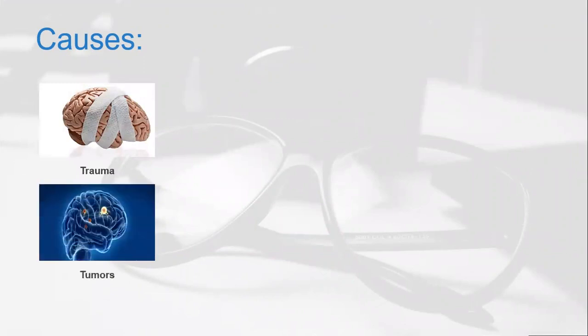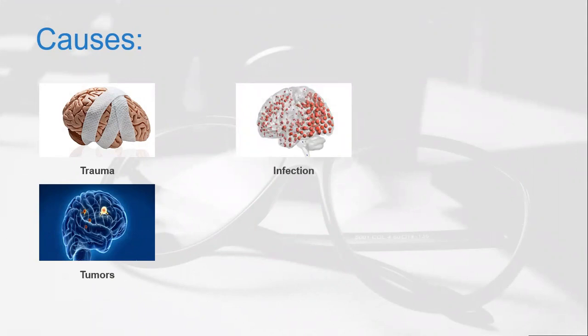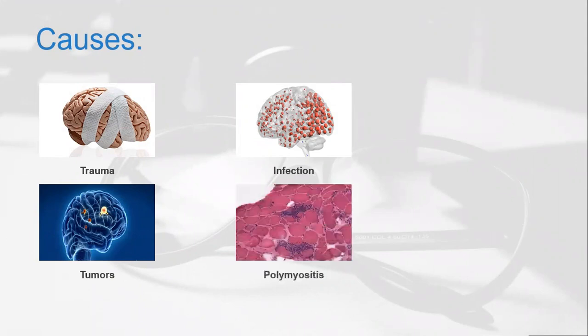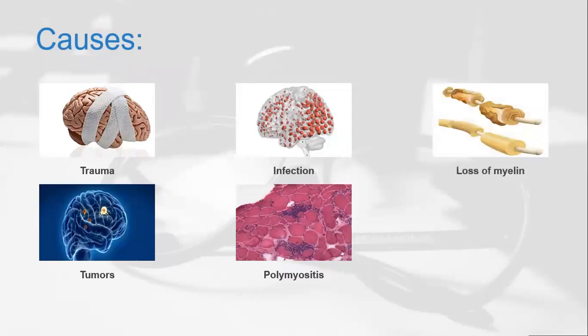Causes of locked-in syndrome include trauma to the head, tumors in the brain, infection as is present in case of Alzheimer's patients, and polymyelitis which is inflammation of the nerves. Loss of myelin of the neurons can also lead to locked-in syndrome. Amyotrophic lateral sclerosis in which muscle inflammation occurs as the neurons aren't working properly.